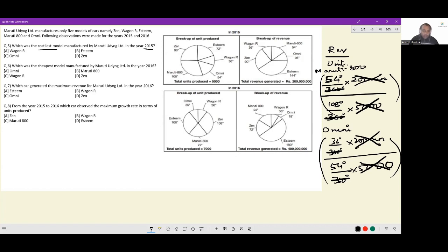So essentially, all we have to compare is the central angle made in the right hand side pie chart divided by central angle made in the left hand side pie chart. Wherever we get the highest fraction, that has to be the answer.